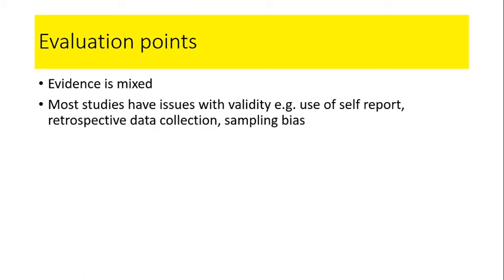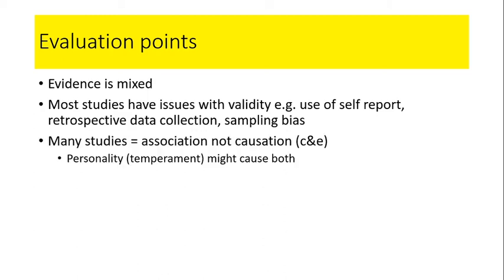Equally, retrospective data collection — that means collecting data after the fact — is a problem here because we're often collecting data many years later where people are saying what their early childhood was like. We can't really rely on people's memories in that way. Another problem is that many studies look at an association between secure attachment in childhood and positive adult relationships, but that doesn't show that one causes the other — which is kind of what the theory says, that a secure attachment causes positive relationships later.